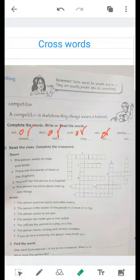We can write number one here. Number two. There are thousands of these at the Olympics. Thousands of competitors, of course. This is number two, the competitors at the Olympics.